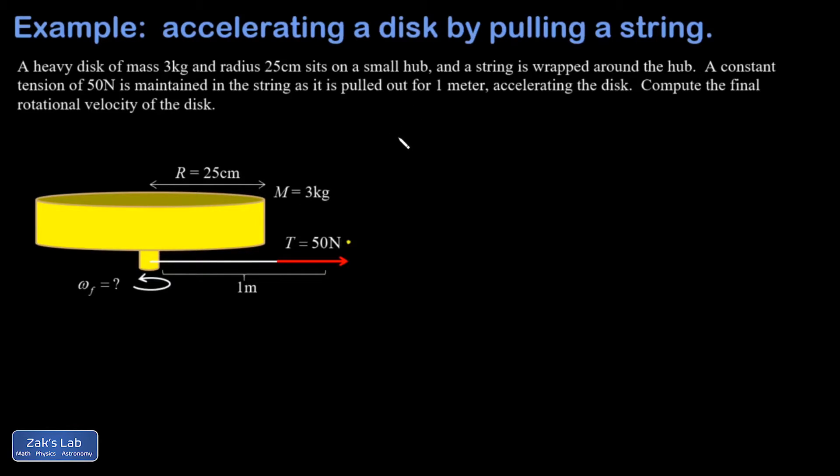So first, let's get our energy input. I should call that work, work done by the tension. That's just 50 newtons going straight through one meter. So immediately, we find that the disk will have 50 joules of energy in it at the end of this process.